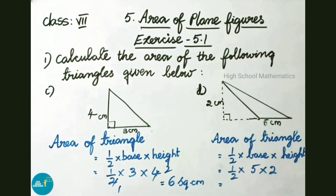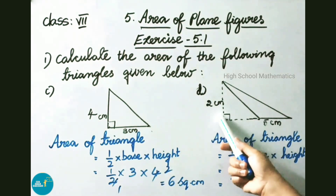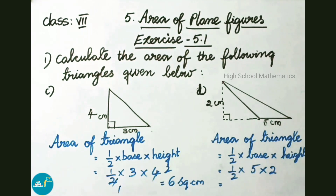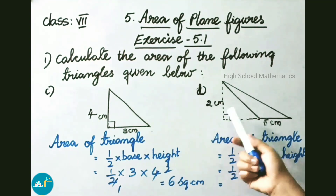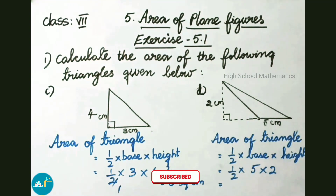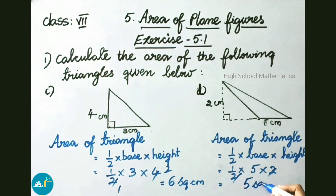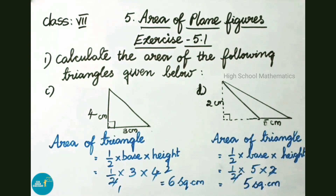See now question D. Here base is 5 cm and height is 2 cm. Area of triangle equals to half into base into height, that is half into 5 cm into 2 cm. The 2 will cancel and so the answer is 5 square centimeter. From this question, we understood that the area of triangle formula is half into base into height.